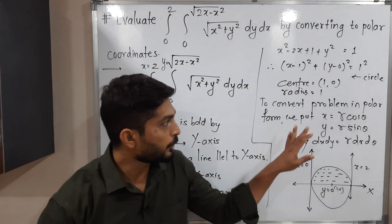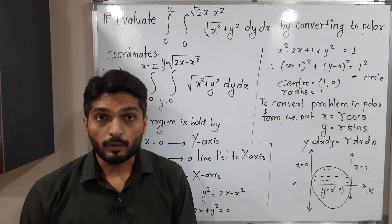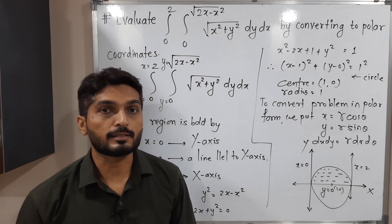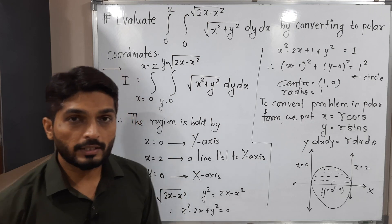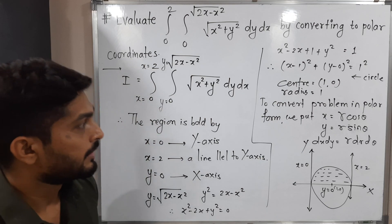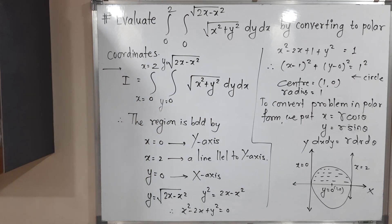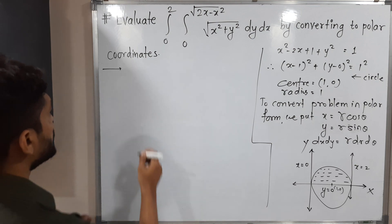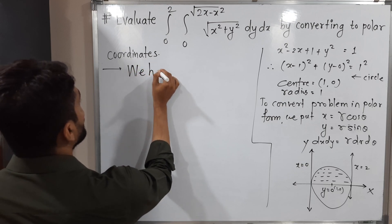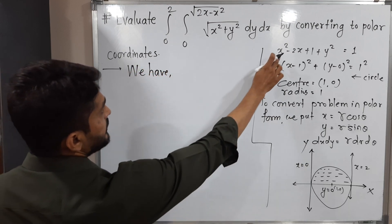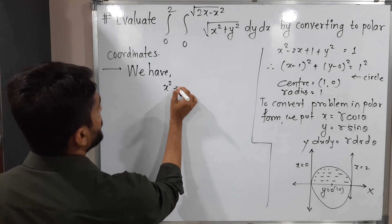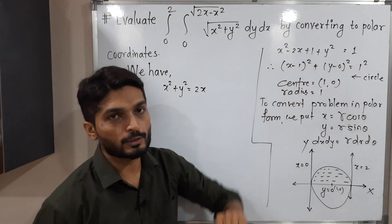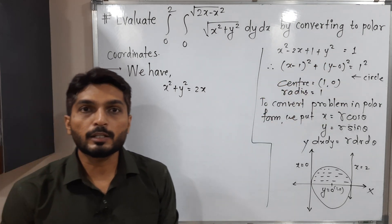First, we convert the equation of the circle to polar form. The equation of the circle can be written as x² + y² = 2x, obtained by rearranging Y² = 2x − x².